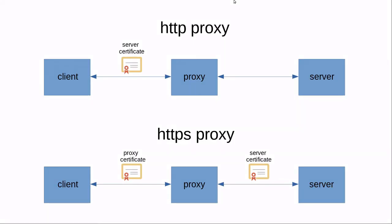HTTP proxies route HTTP traffic between clients and servers. The problem with HTTP proxies is that these days almost 100% of web traffic is encrypted. An HTTP proxy can't handle encrypted traffic — it can't cache or scan the data, so it is not very useful in this case. To get over it, you will have to set up SSL bump. With a simple HTTP proxy, the client uses the original server certificate to encrypt the connection and the proxy routes the encrypted data between them.